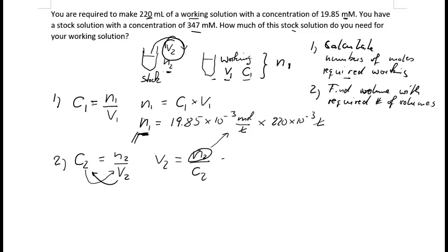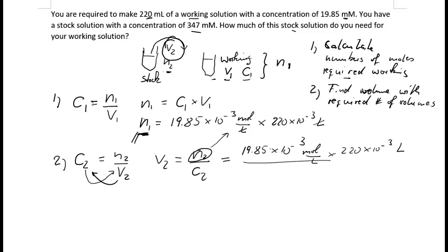Since n2 is the number of moles we just calculated, we can write: v2 equals 19.85 times 10 to the minus 3 mole per liter times 220 times 10 to the minus 3 liters — that is the number of moles — divided by the concentration of the stock solution, which is 347 times 10 to the minus 3 mole per liter.